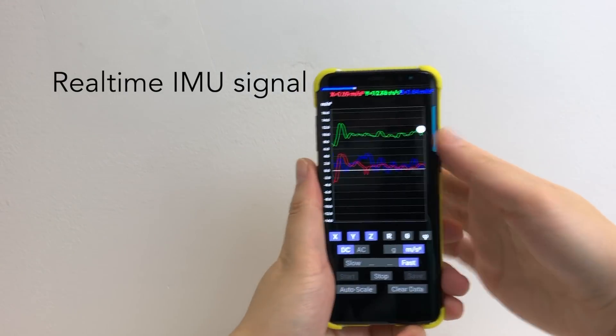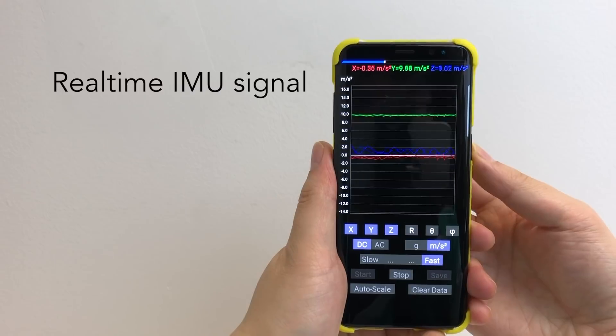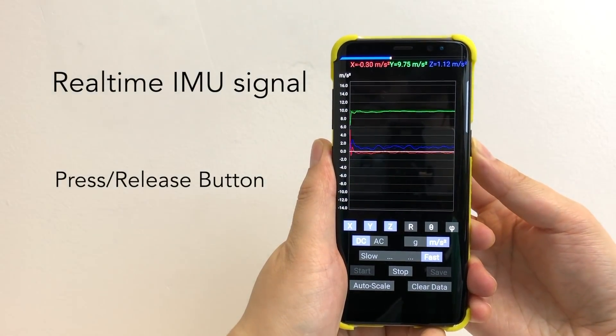During user interaction, the IMU captures strong and unique signals in real time, allowing our algorithm to recognize in real time what events are produced by which widgets.